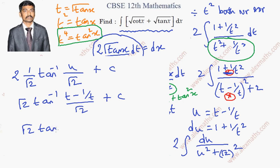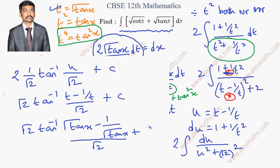Now back-substituting u = t − 1/t, and then t = √(tan x), we get √2 · tan⁻¹((√(tan x) − 1/√(tan x)) / √2) + C. Taking LCM inside the argument, this simplifies to √2 · tan⁻¹((tan x − 1) / (√2 · √(tan x))) + C.